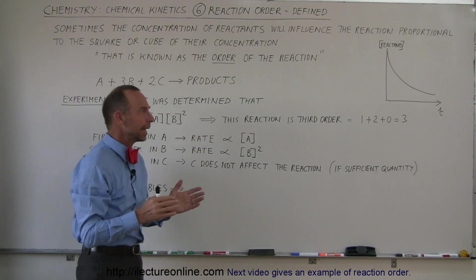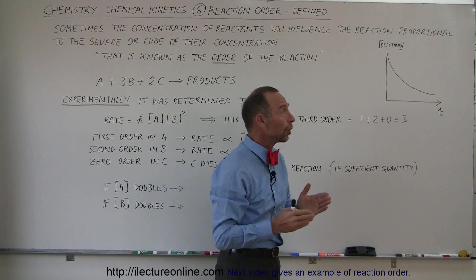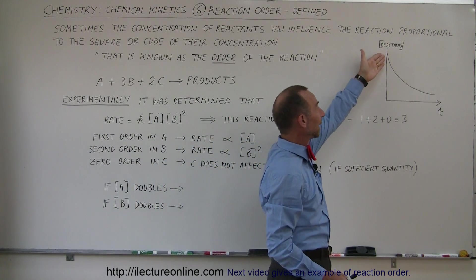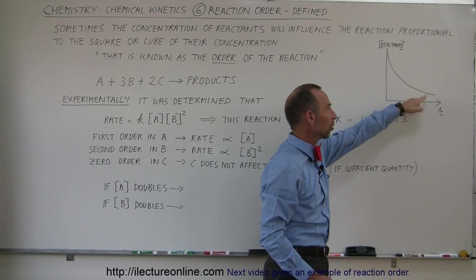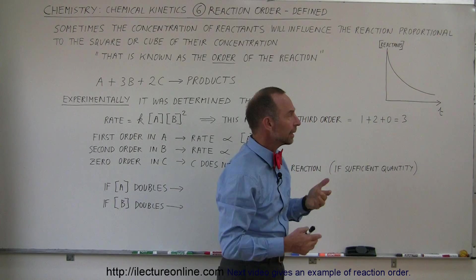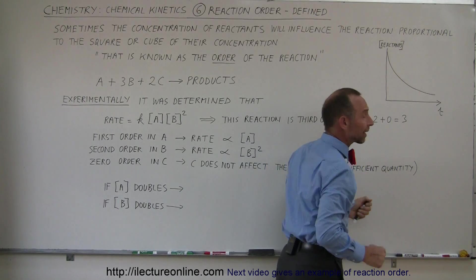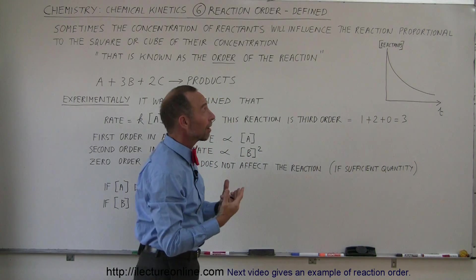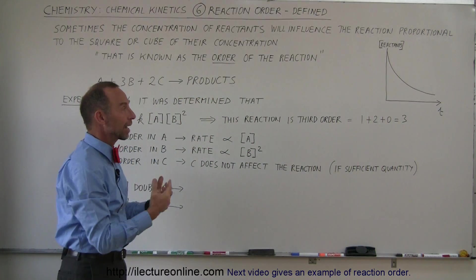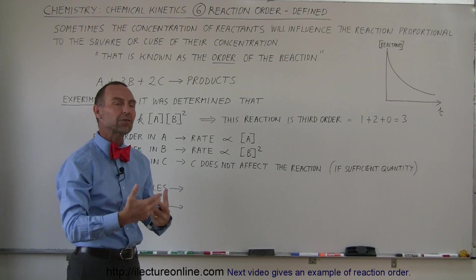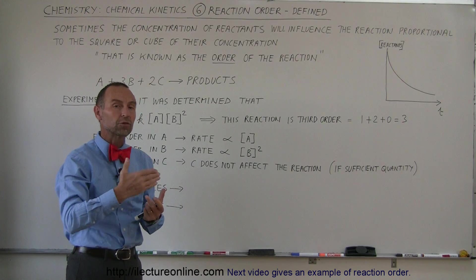Well going back a little bit, whenever a reaction occurs we know that the rate of the reaction, which is represented by the slope of this line, will be proportional to the concentration of the reactants. So the more reactants you have in solution the faster the reaction will take place, and as the reactants are being consumed the reaction will slow down.